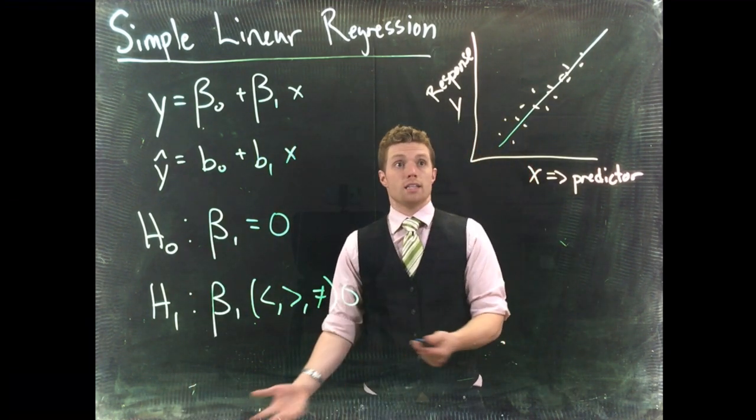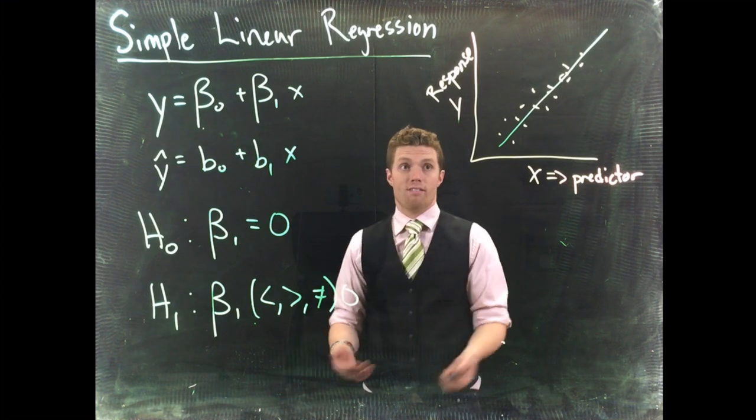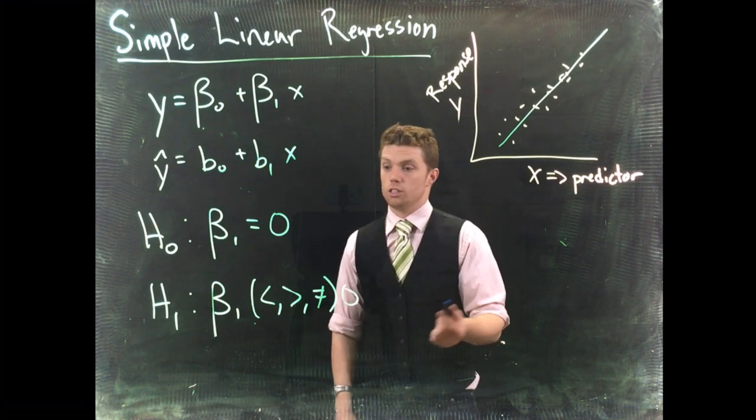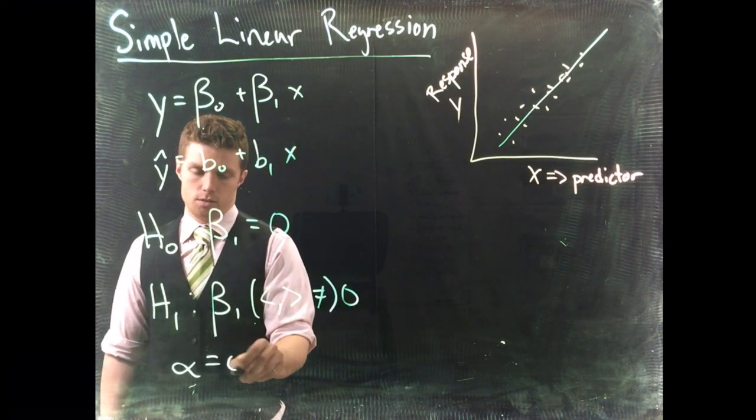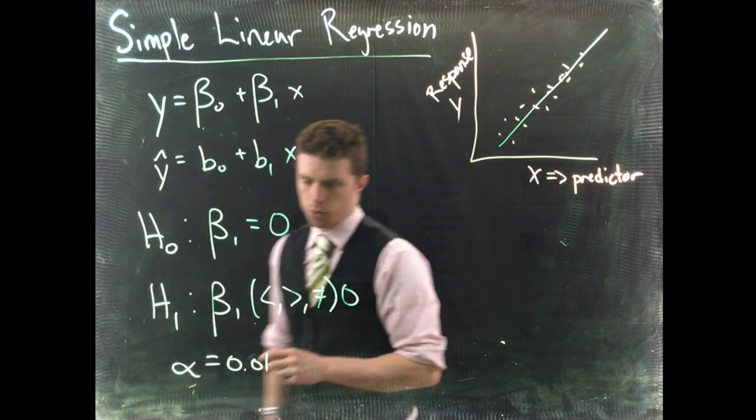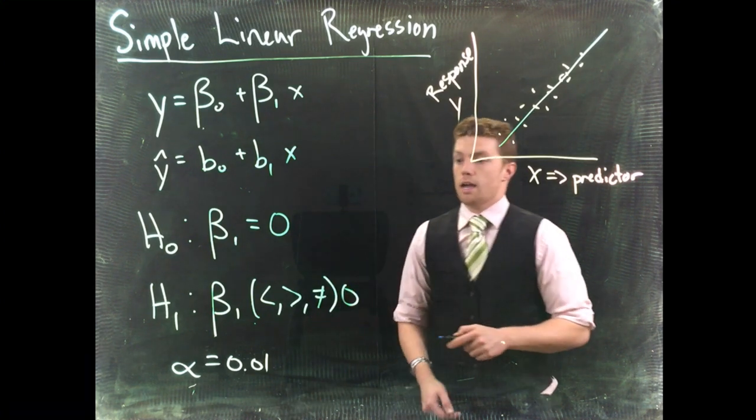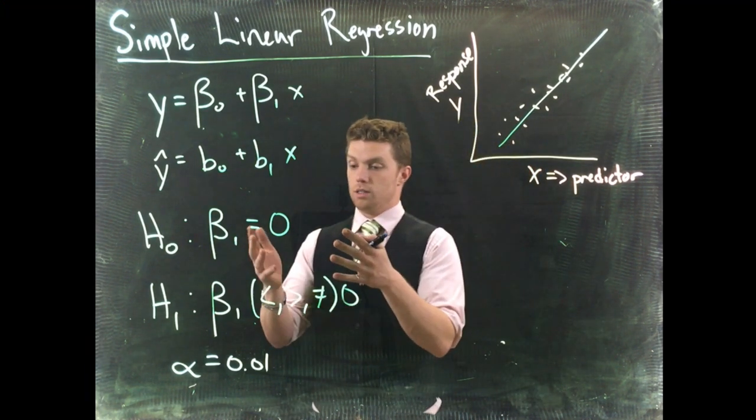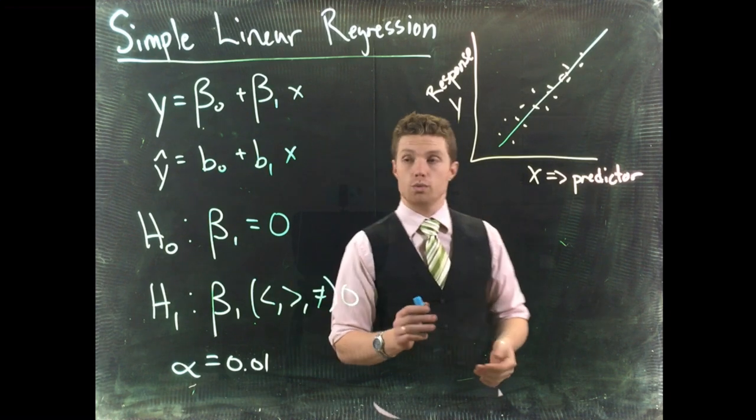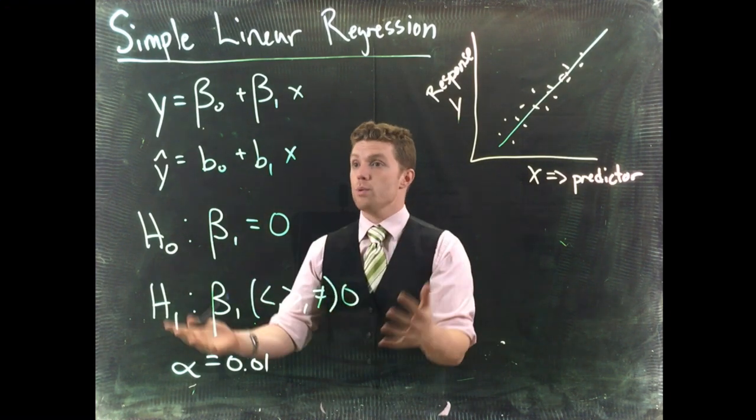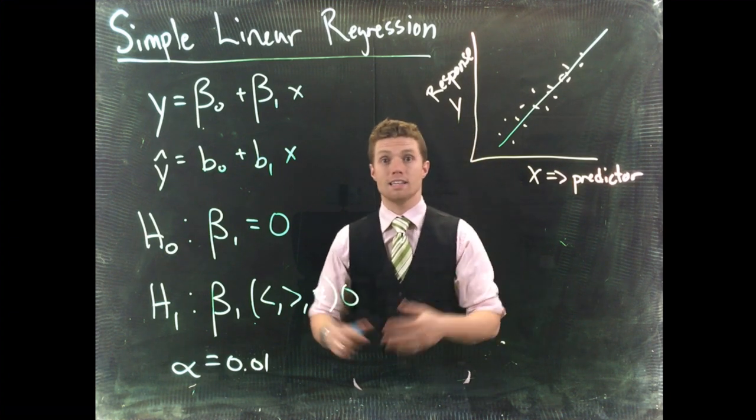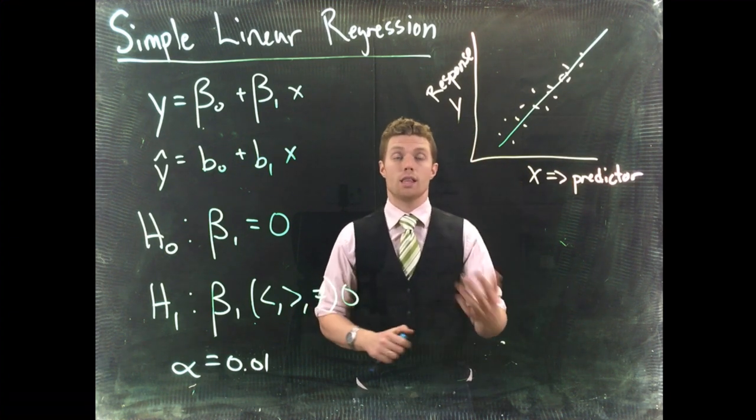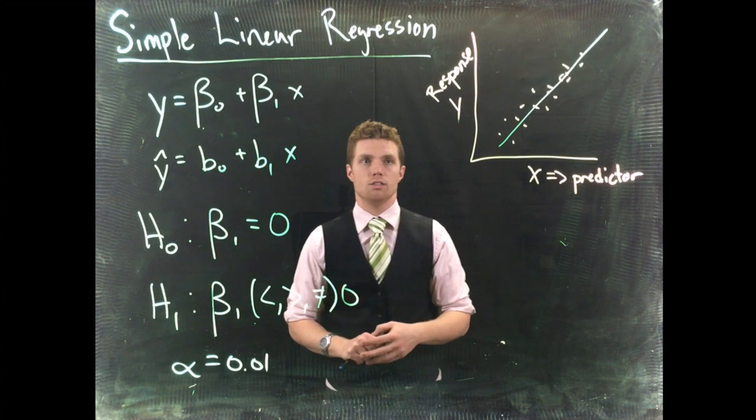And so we're trying to test to see, do we have a significant relationship? And we still are going to test against some alpha value. For example, we could do like 0.01. And so we need a way to actually be able to go in and do this analysis. But this is how we would set up our hypothesis. We're trying to see is there, in fact, a significant relationship between these two values.